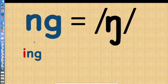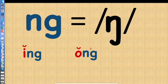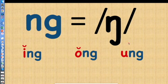So if you say ing, the I is saying ih — ih, ing. Everyone is happy, it's saying its sound. If it's O-N-G, it's going to be ong — everyone is happy, the O is saying ah, its sound. If there's a U-N-G, it's going to say ung. Everyone is happy, it's saying its sound.